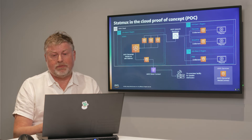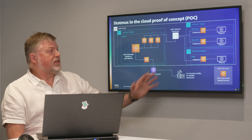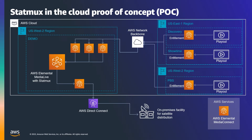Let me show you the diagram. It starts here on the East Coast where most of the content providers are operating — though it could be on the West Coast or even in Europe. In this case, we have Discovery, Showtime, and PBS participating in this POC. We're using their playout systems and Media Connect with an entitlement system that allows them to hand off the content to another account within AWS. We can then take the content from there and run it across the AWS backbone and collect it in US West 2, where we use Media Connect to receive the content.